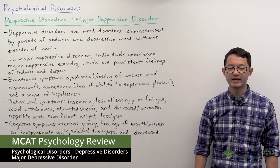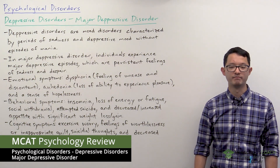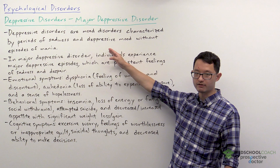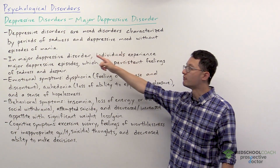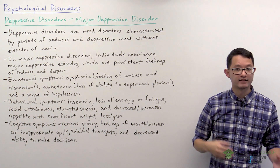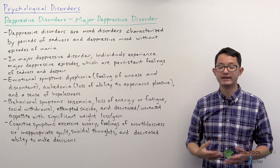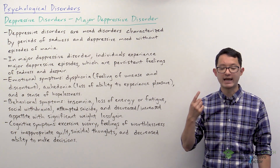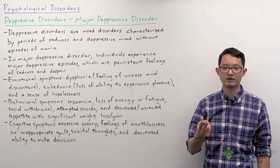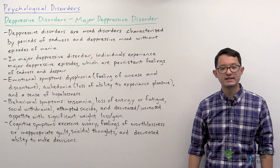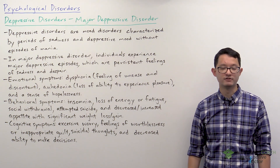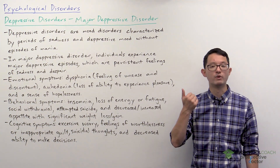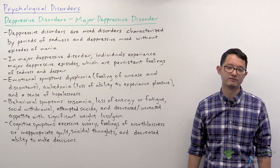In this video, we're going to go over a type of depressive disorder called major depressive disorder. Depressive disorders are mood disorders characterized by periods of sadness and depressive mood without episodes of mania. This last part is really important — patients who experience both depressive episodes and manic episodes have bipolar disorder, not depressive disorder. Individuals who experience depressive episodes do not necessarily have depressive disorder; they must experience depressive episodes without manic episodes to have depressive disorder.